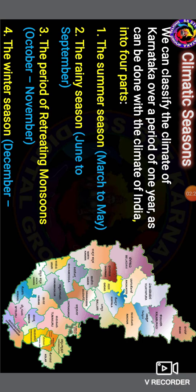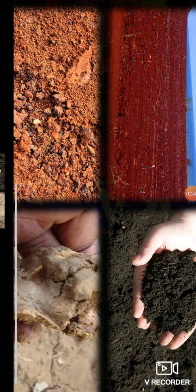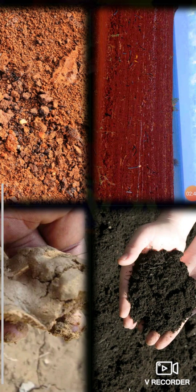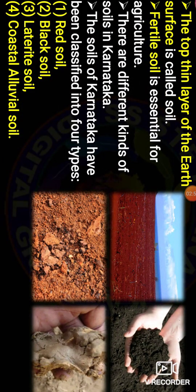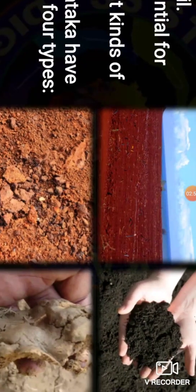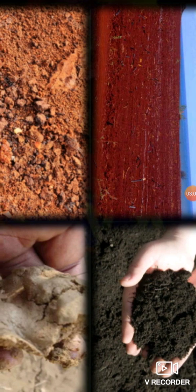These are all the topics we studied in our previous class. Today, let us start the concept of soil — the soil of our Karnataka. The top thin layer of the earth's surface is called soil. Soil is essential for agriculture.